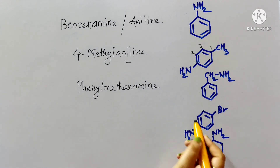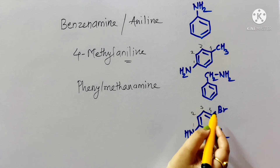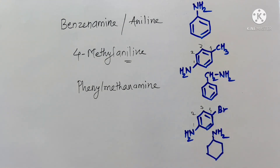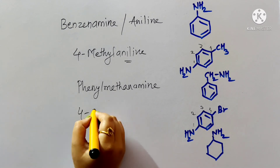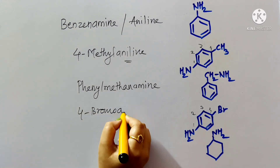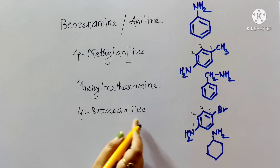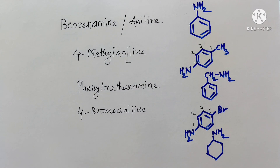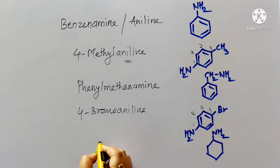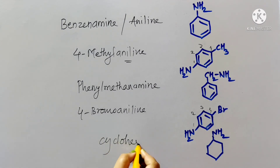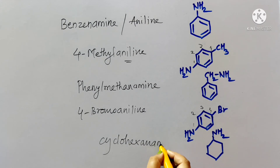For 4-bromoaniline, numbering the benzene ring gives bromine at position four, so the IUPAC name is 4-bromoaniline or 4-bromobenzenamine. When an amino group is attached to cyclohexane, replacing the 'e' of cyclohexane gives cyclohexanamine.